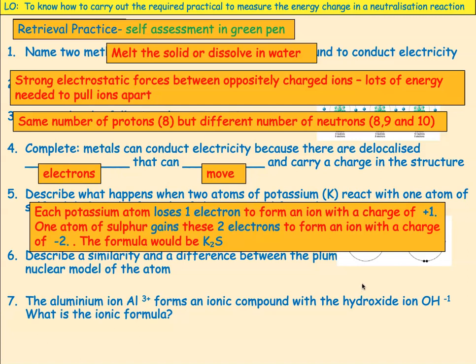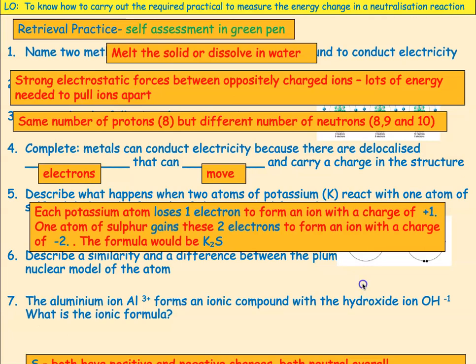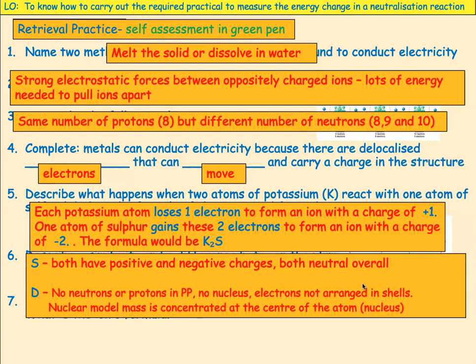Describe a similarity and one difference between the plum pudding model and the nuclear model of the atom. Both have positive and negative charges; both are neutral overall. Differences: no neutrons or protons in the plum pudding, no nucleus, electrons are not arranged in shells. In the nuclear model the mass is concentrated at the centre, whereas in the plum pudding it's more dispersed.